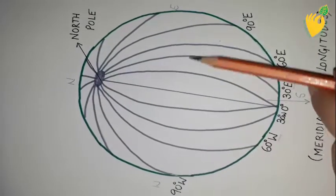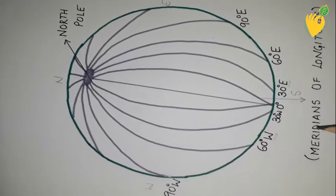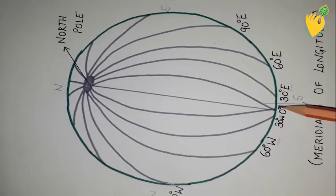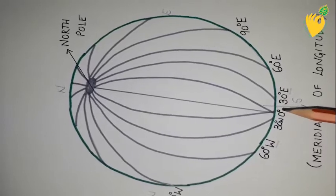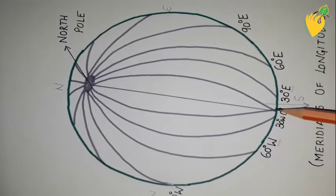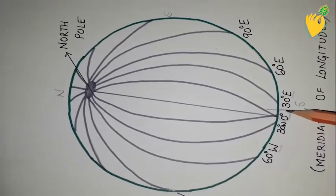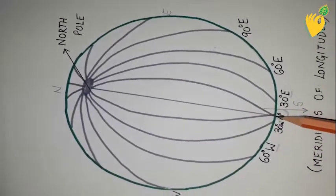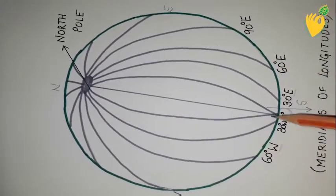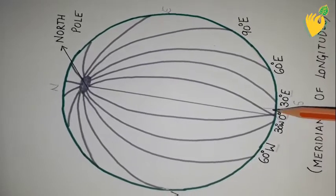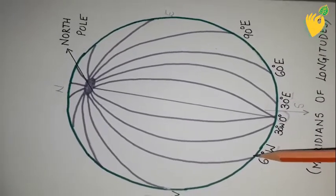Just as the equator was the starting point of all the parallels of latitude, the starting point for all longitudinal lines passes near the Greenwich Observatory, located near London. This line, marked as zero degrees, is the starting point of all longitudinal lines. From here, all the longitudinal lines start in the eastern hemisphere as well as in the western hemisphere.